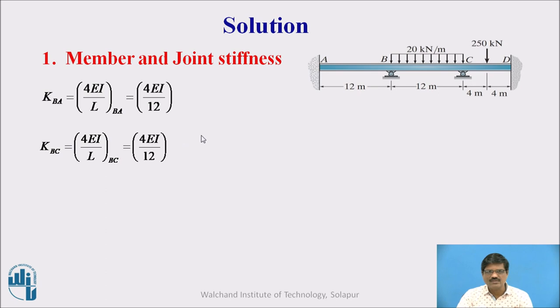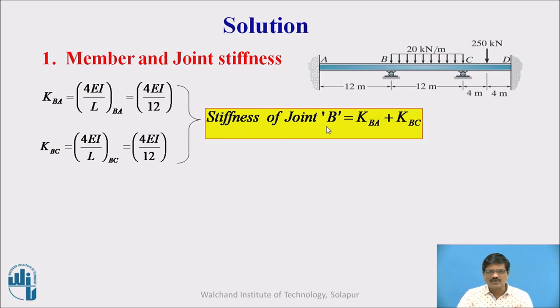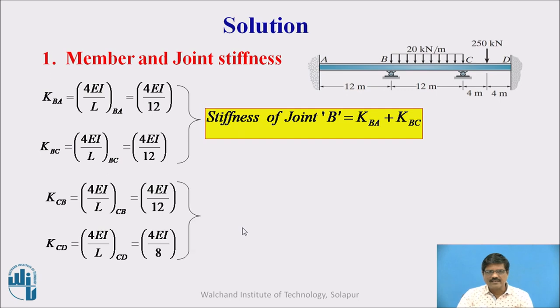Accordingly we substitute the values. And the summation of these two stiffnesses will give me a stiffness of joint B. Similarly we determine the stiffness for member CB as well as CD. For CB we have again 4EI by L and for CD since it is fixed end we have 4EI by L. Accordingly the summation of these two stiffnesses gives the stiffness of joint C.